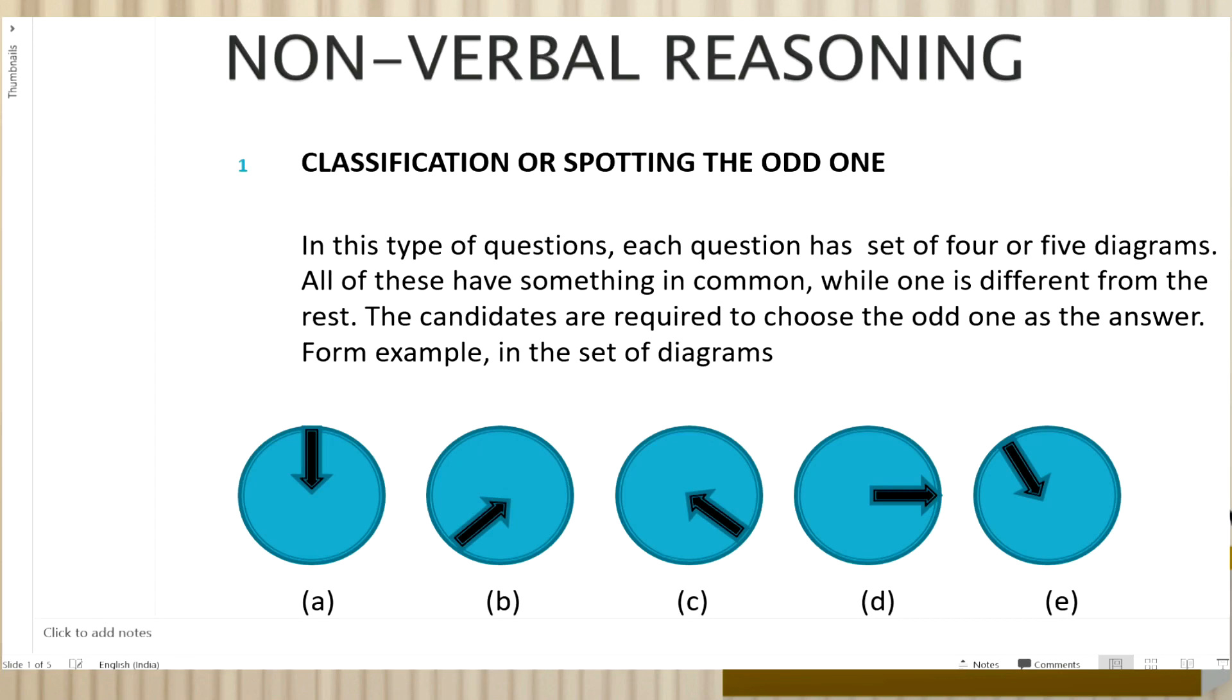Hello children, today we will be doing questions of non-verbal reasoning. The first type is spotting the odd one. On the screen you can see this type of question has four or five diagrams. All of these have something in common while one is different from the rest. The candidates are required to choose the odd one as the answer. For example, see the figures given here carefully.